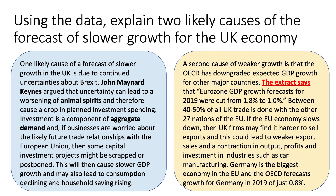Using the extract further, Germany is the biggest economy in the European Union, and the OECD forecast according to the chart is that Germany will grow in 2019 by just 0.8%. So the biggest economy in the EU will be suffering one of the slowest growth rates, and that will clearly impact on the UK.